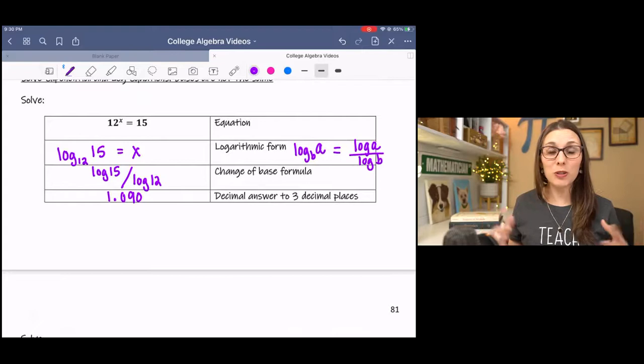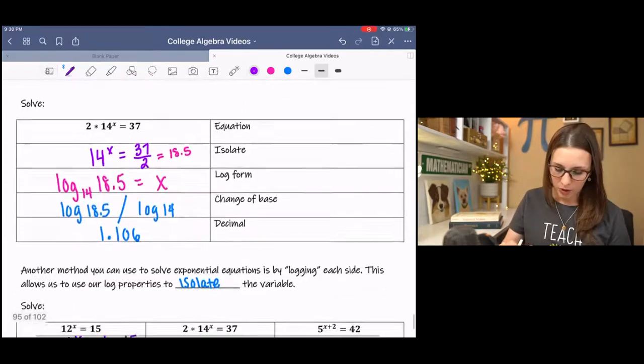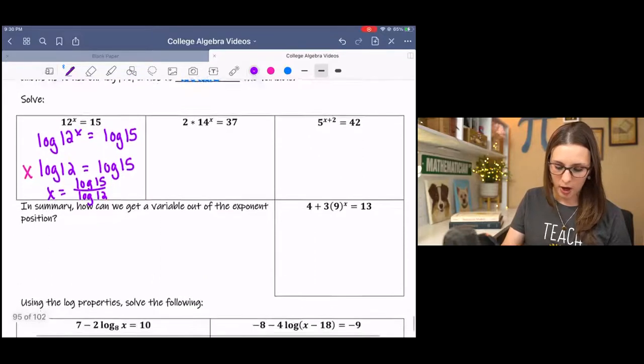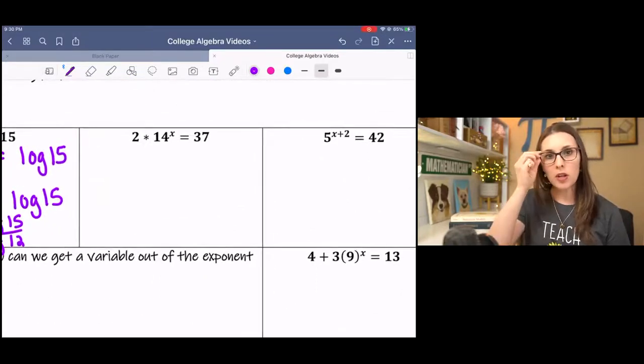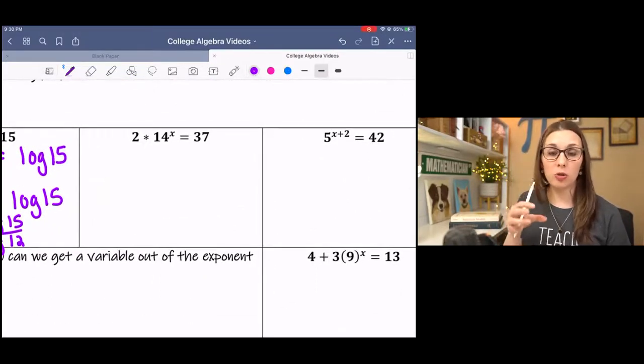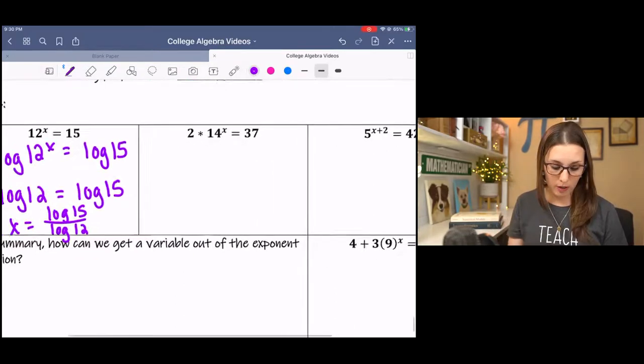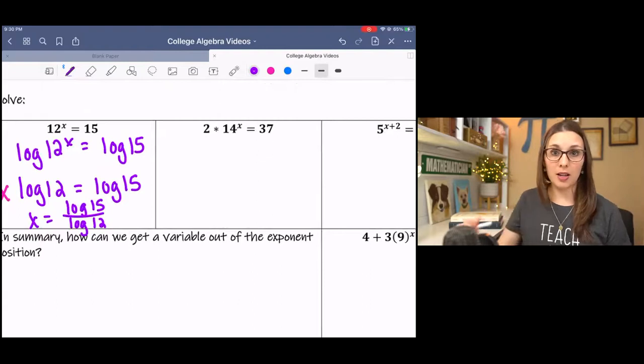Don't you love that? That you can go two different routes and get the same answer. I love that about math. So I want you to go ahead and try the next one. Make sure that you isolate the exponential component first and then try it with this new method instead. Pause it and come back.